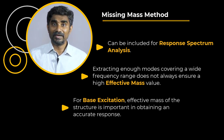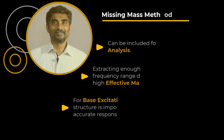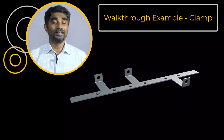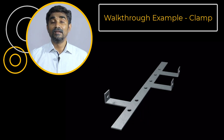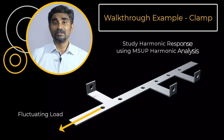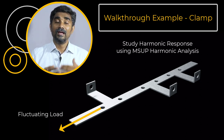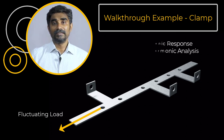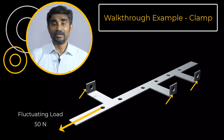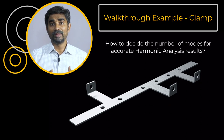Let's now get a better understanding of these concepts with the help of a walkthrough example in ANSYS Mechanical. We will consider a clamp designed to support external components connected to it, which can exert a horizontal fluctuating load at one of its ends. Our goal is to determine the harmonic response of this clamp using a harmonic analysis with the mode superposition technique. The clamp is made of structural steel and is subjected to 50 newtons of fluctuating load, fixed on its vertical faces.